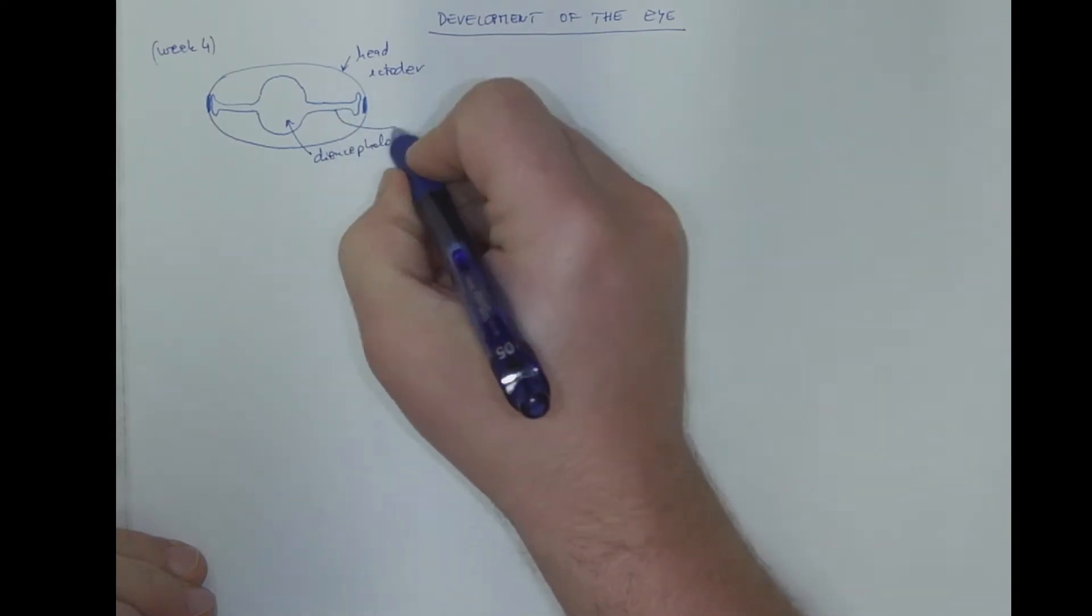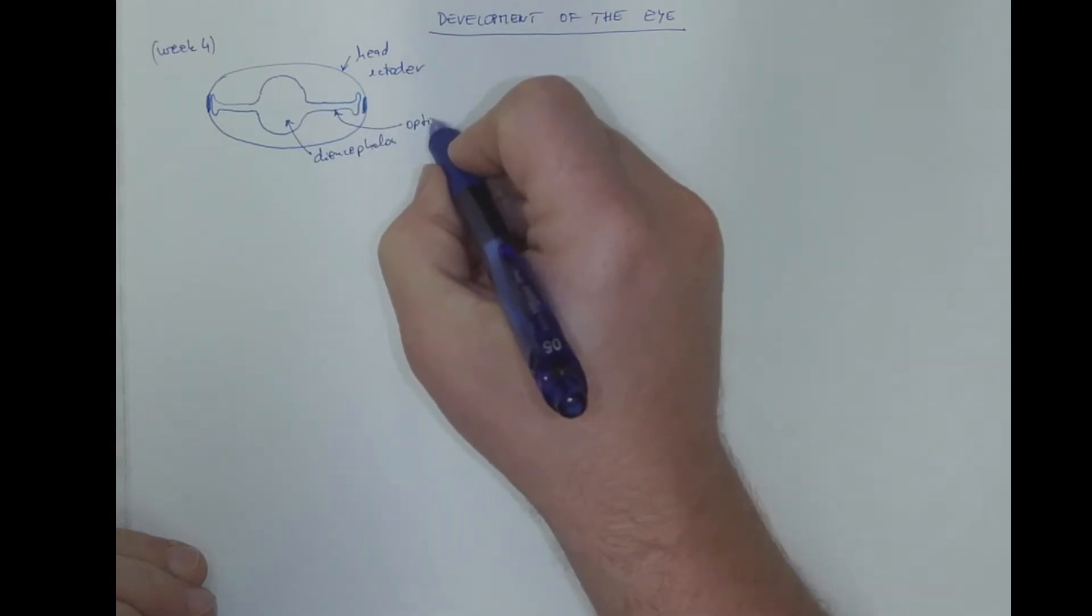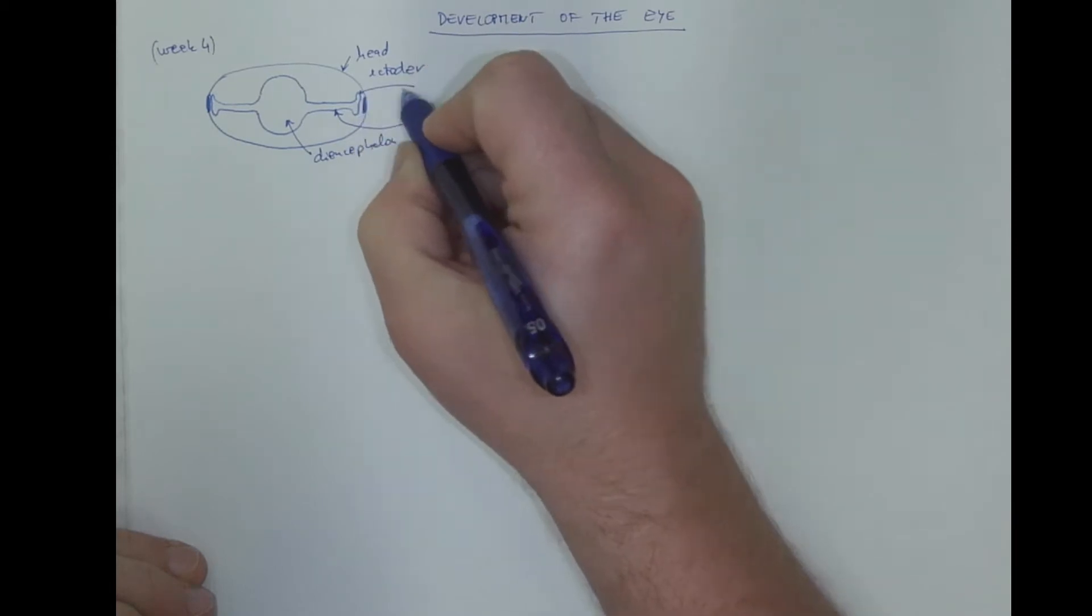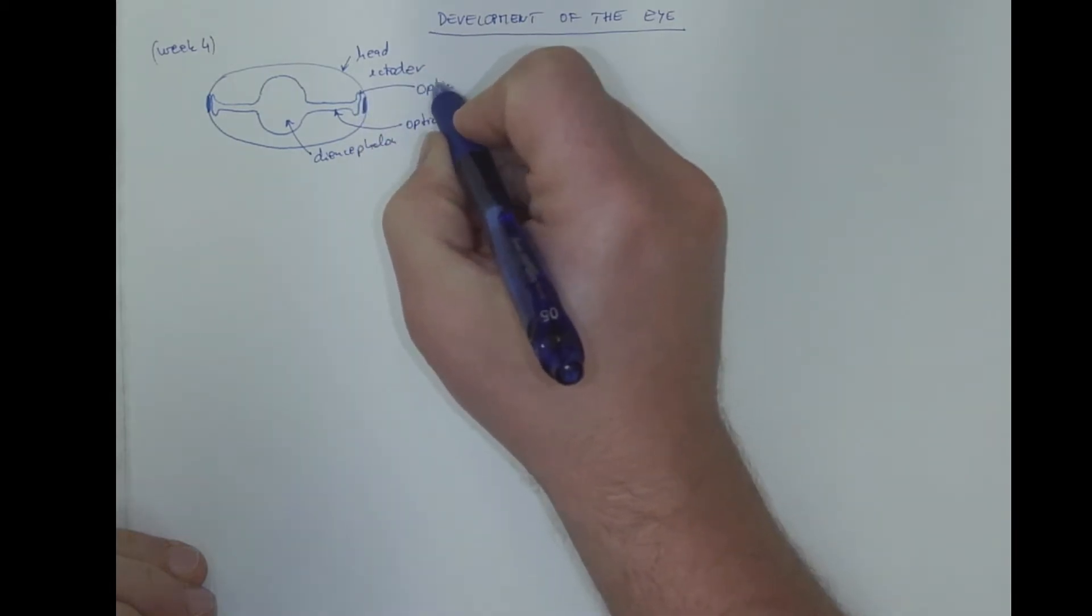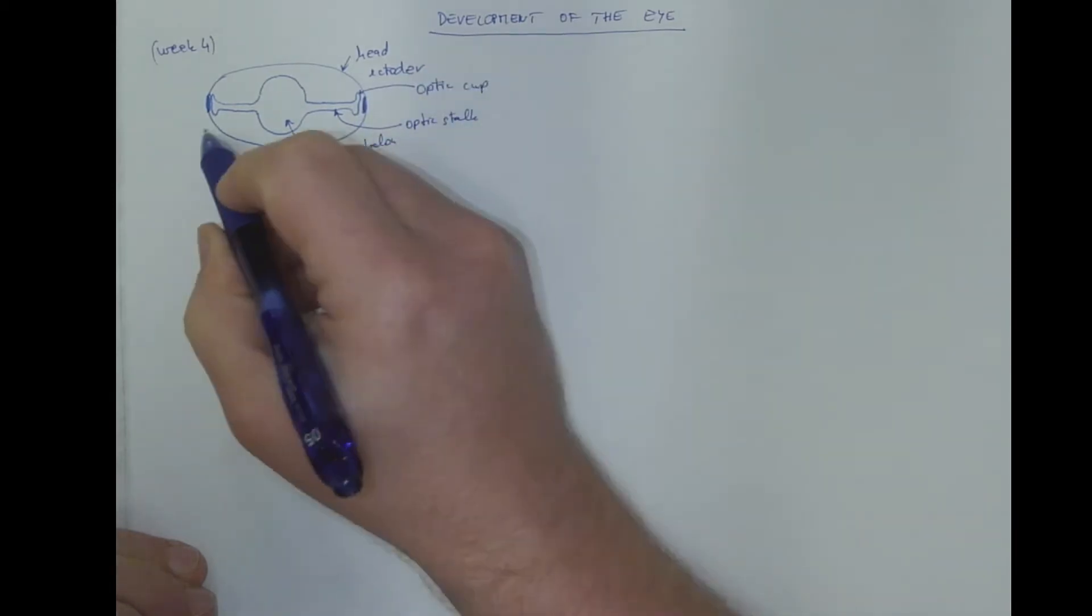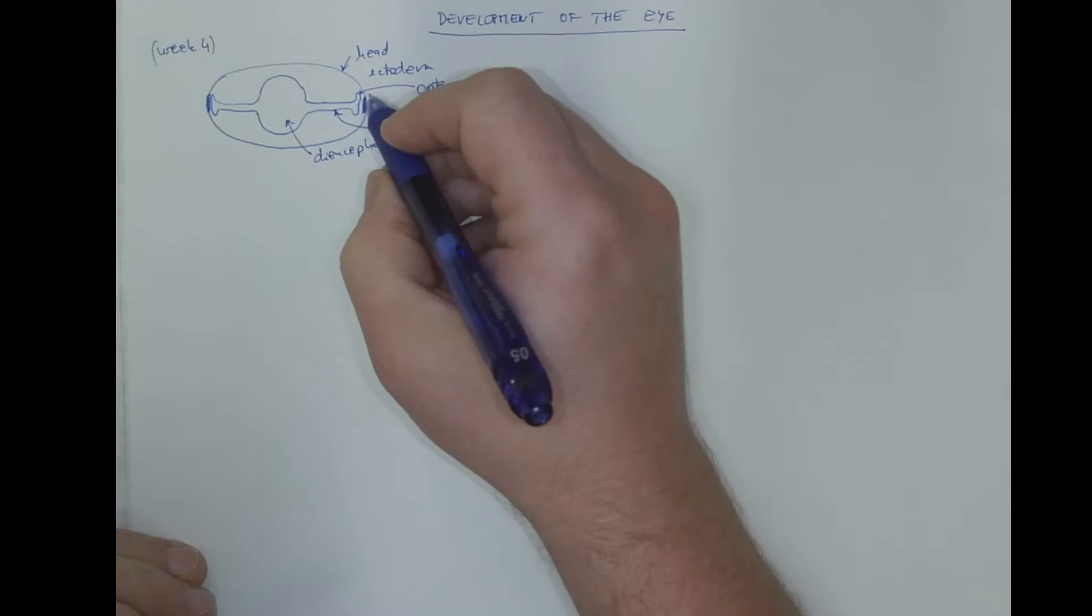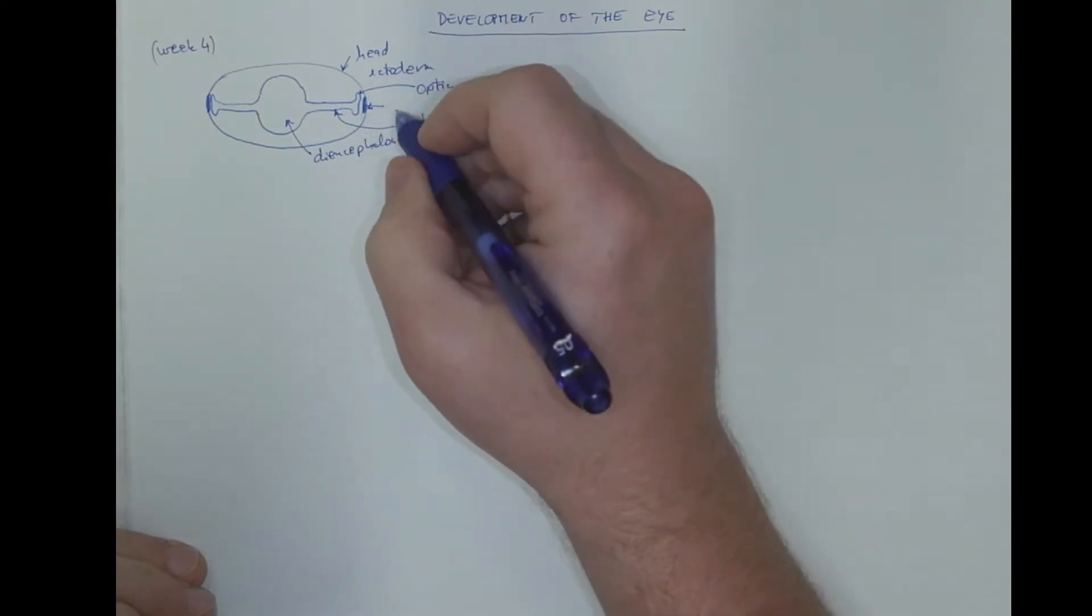Laterally growing optic stalks, ending with optic cup. And the thickening of the head ectoderm here is the lens placode.